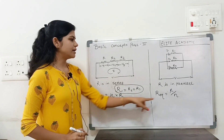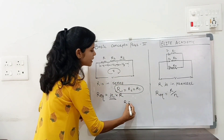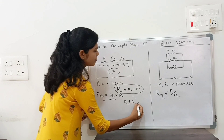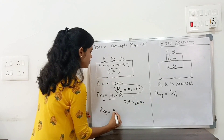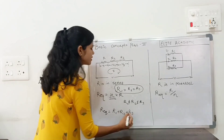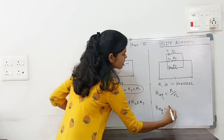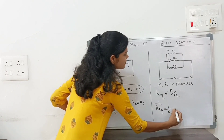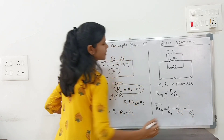But when R1, R2, R3 are not the same, then R equivalent for series equals R1 plus R2 plus R3. Whereas in the case of parallel, it is 1 upon R1 plus 1 upon R2 plus 1 upon R3.